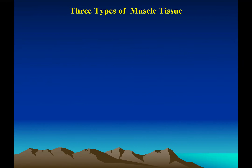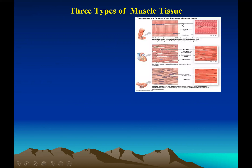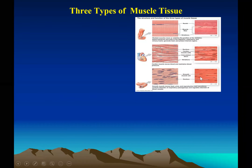There are three types of muscle tissue. Skeletal muscle tissue is attached to the skeletal system and allows you to move and manipulate objects. It has a striated appearance, is multi-nucleate, and is voluntary. Smooth muscle is spindle-shaped and found in the walls of hollow internal organs like blood vessels, the GI tract, and the uterus. Smooth muscle is uni-nucleate and involuntary.